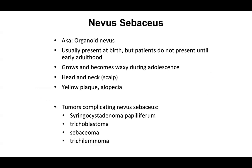Starting out with sebaceous neoplasms: nevus sebaceous, also known as an organoid nevus. It's usually present at birth, but patients do not present until early adulthood. It grows and becomes waxy during adolescence. You can see it often on the head, neck, and scalp — a yellow plaque that often causes alopecia. Tumors complicating a nevus sebaceous include syringocystadenoma papilliferum (SCAP), trichoblastoma, sebacioma, and trichlomoma.